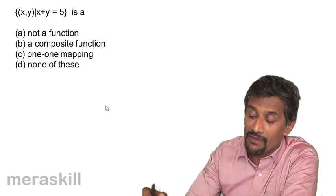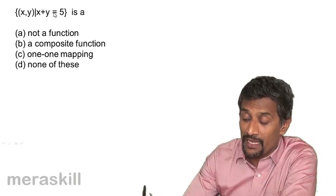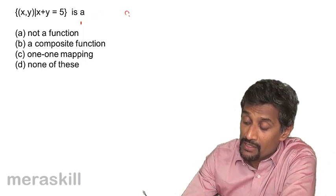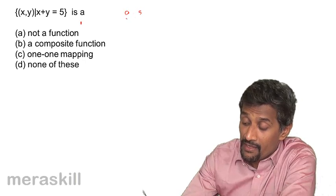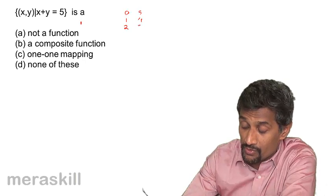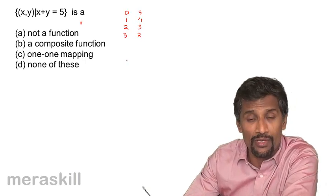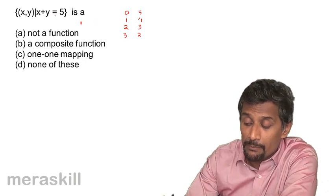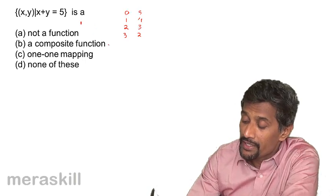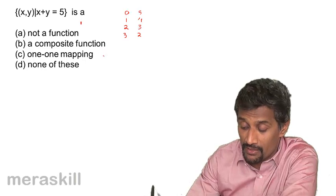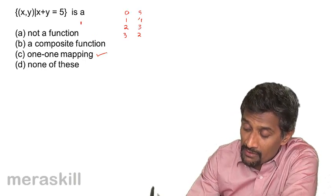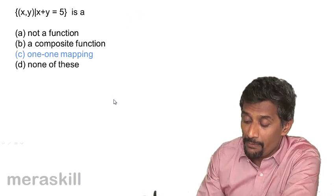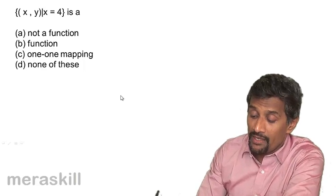Consider x comma y where x plus y equals 5. This is definitely a function. If you put in various values of x, you get the corresponding values of y: x=0 gives y=5, x=1 gives y=4, x=2 gives y=3. For every x there is a unique value of y. It's a simple linear function, not a composite function. It is a one-one mapping — each domain element has a unique range value.